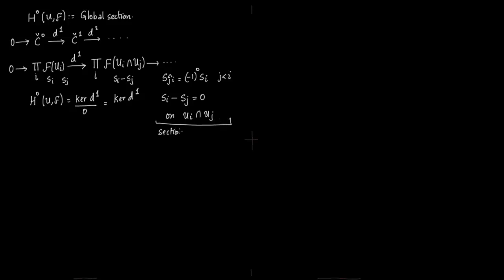The elements lying in kernel of D1 are precisely those elements which agree on the intersection of Ui and Uj. You have set Ui, you have Uj, and you have the intersection. You have section Si, Sj and they agree here. So you can glue these sections together to get the global sections. Any two sections which agree on the intersection, you glue them together to get the global section.